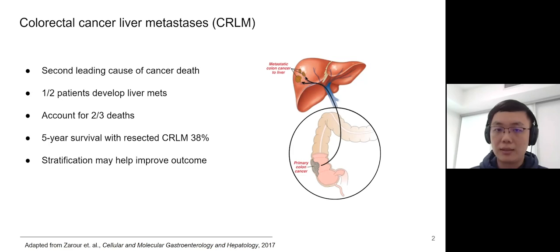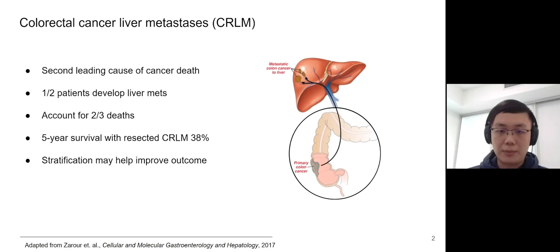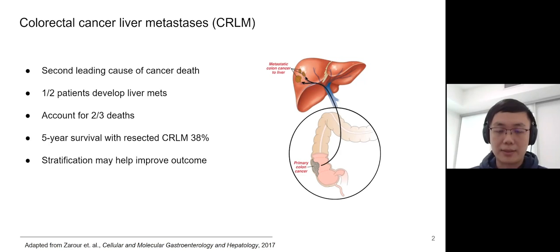Half of colorectal cancer patients develop liver metastases, and these liver metastases account for two-thirds of deaths. So far, hepatic resection is the only curative treatment for those patients, but even with resective metastases, the five-year survival is only around 40%. It is important for us to develop better stratification methods, as this may help us understand the disease and provide better treatment to patients.